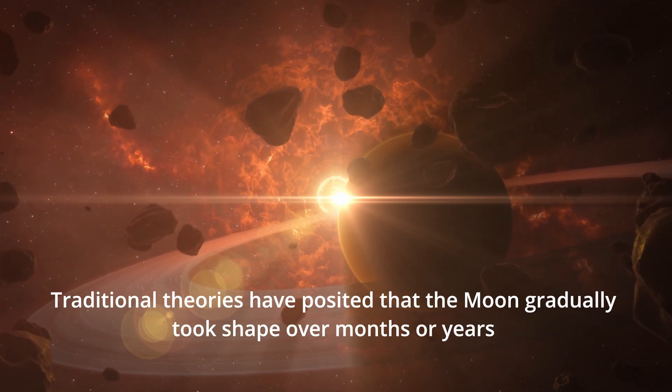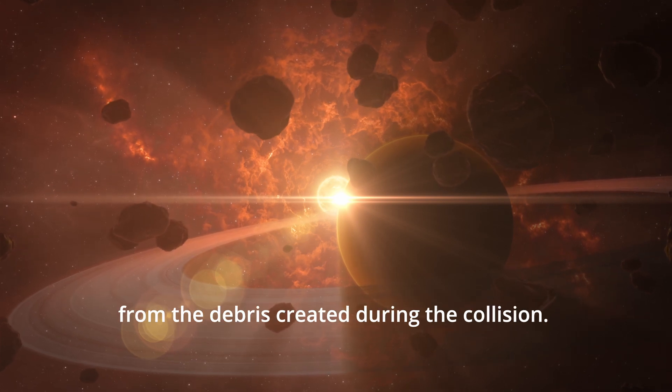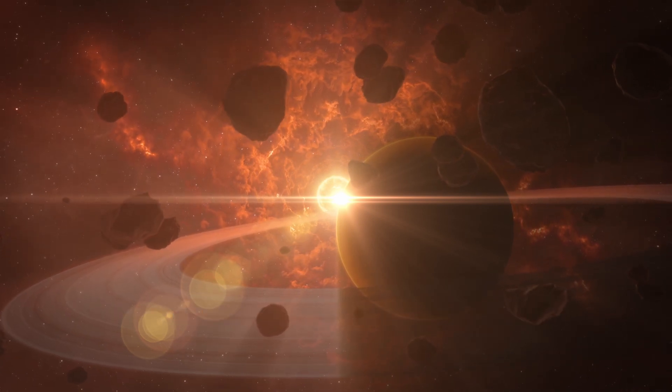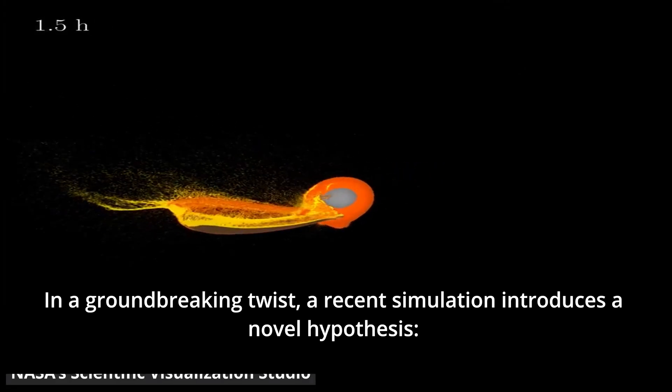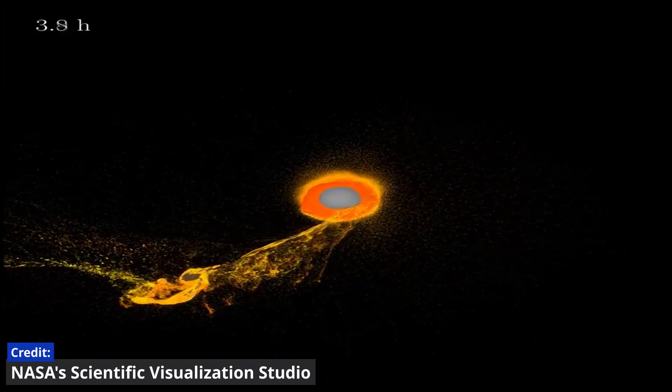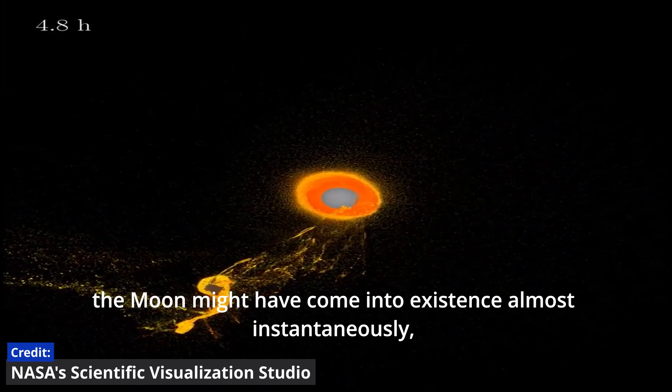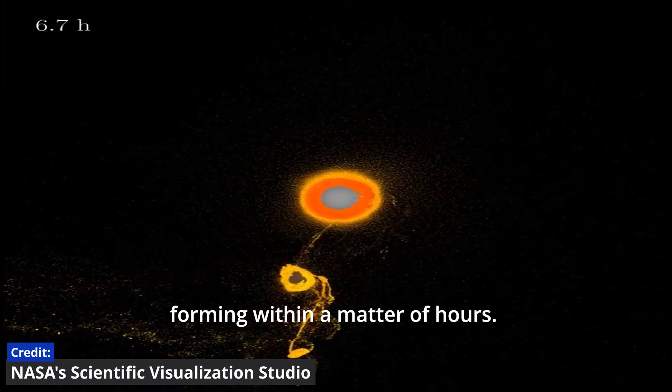Traditional theories have posited that the Moon gradually took shape over months or years from the debris created during the collision. In a groundbreaking twist, a recent simulation introduces a novel hypothesis. The Moon might have come into existence almost instantaneously, forming within a matter of hours.